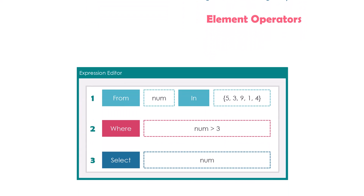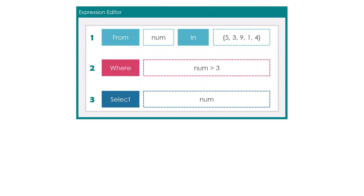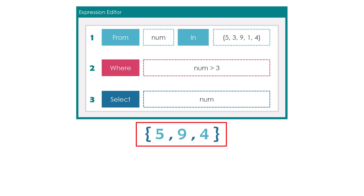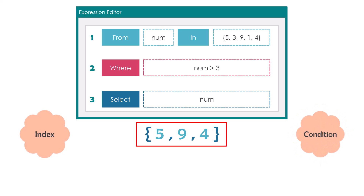For example, here I have a query to get the numbers from an array which are greater than 3. The result of this query is a collection of integer numbers — we have all numbers which are greater than 3. Assume I don't need the entire result, but only a single specific element. To do that we can use the index of the element, or we can set a condition.